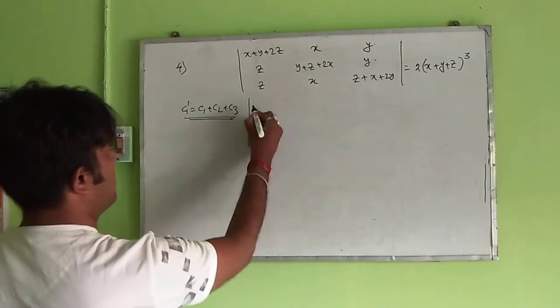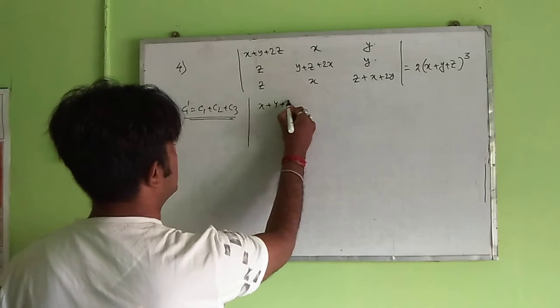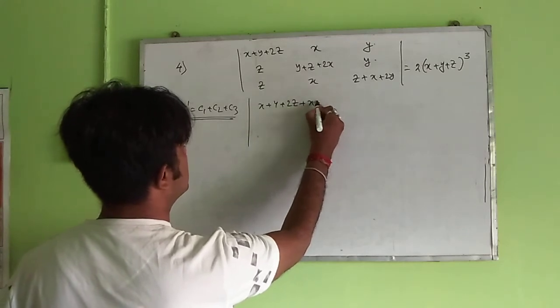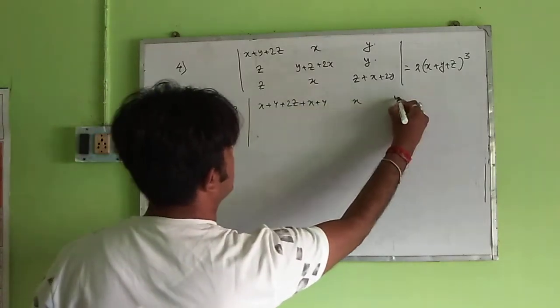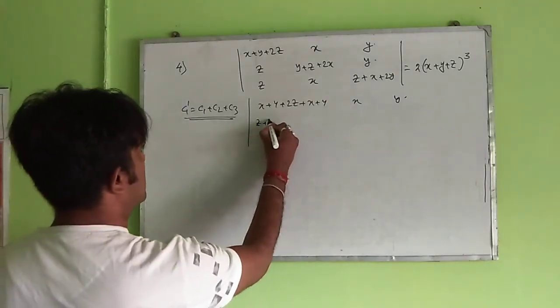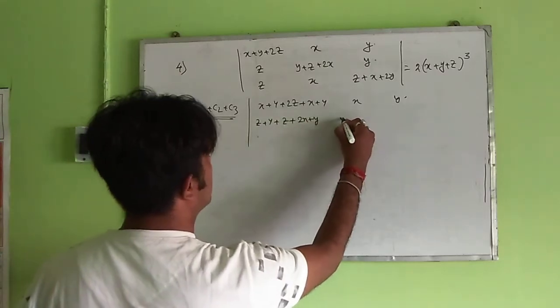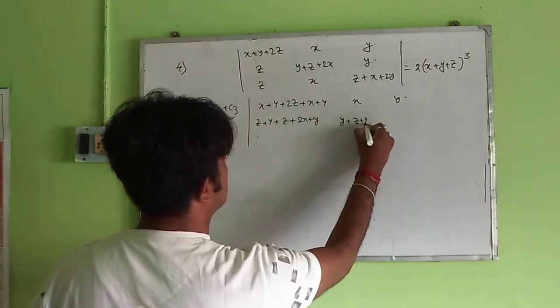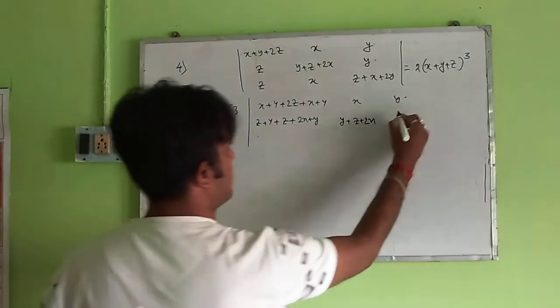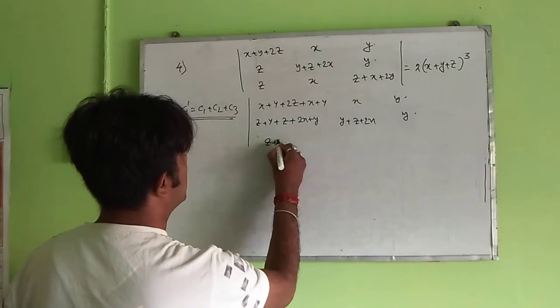Then x plus y plus 2z plus x plus y, x, y, z plus y plus z plus 2x plus y, y plus z plus 2x, y, z plus x.